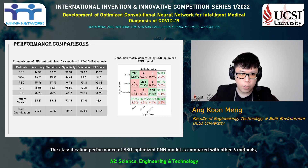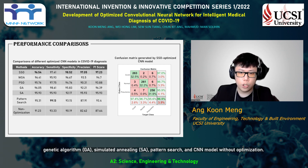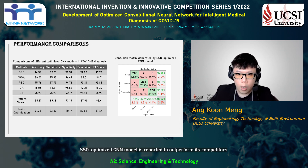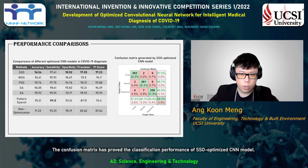The classification performance of the SSO-optimized CNN model is compared with six other methods: Whale Optimization Algorithm (WOA), Particle Swarm Optimization (PSO), Genetic Algorithm (GA), Simulated Annealing (SA), Pattern Search, and CNN without optimization. The SSO-optimized CNN model is reported to outperform its competitors by producing the best accuracy, specificity, precision, and F1 score in diagnosing COVID-19. The confusion matrix has further proved the classification performance of the SSO-optimized CNN model.